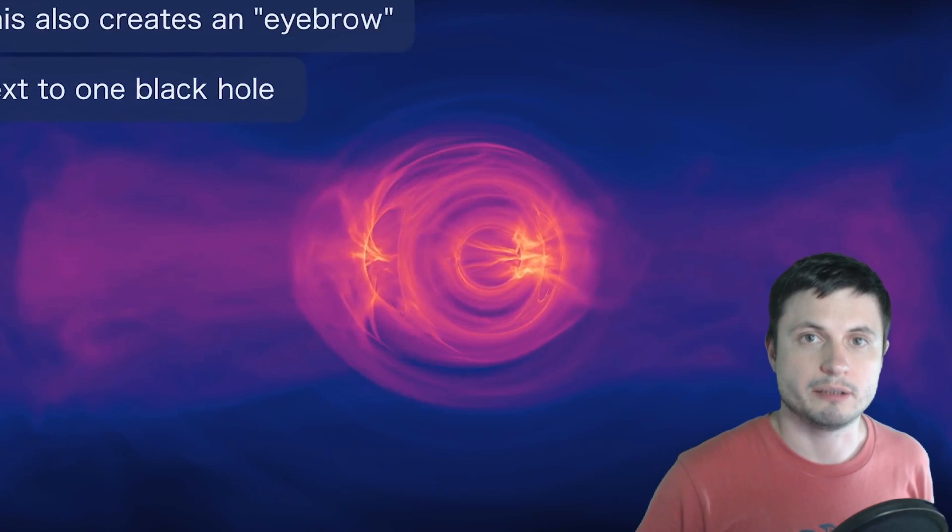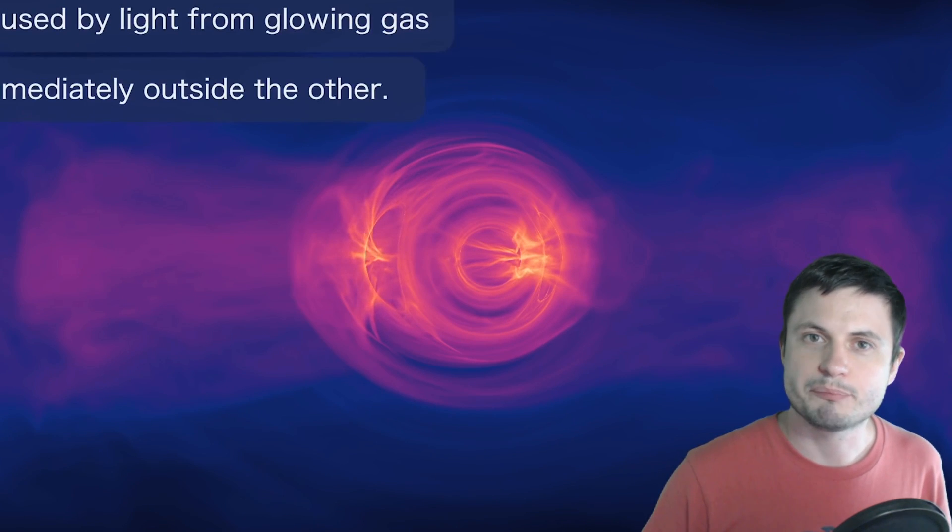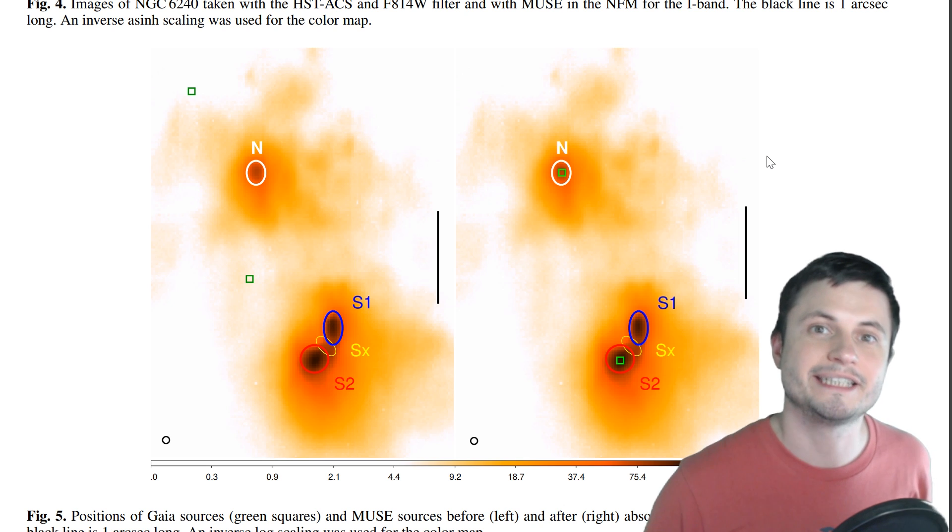But the main difference between the Milky Way galaxy and NGC 6240 is the mass of the actual black holes. In comparison to Sagittarius A star, the supermassive black hole in the middle of our own galaxy, the black holes inside NGC 6240 are ridiculously large. Each of these black holes has a mass of at least 90 million masses of the sun, which is at least 20 times larger than the Milky Way's black hole. So all of these galaxies will eventually merge into a tremendously large ultra massive black hole.